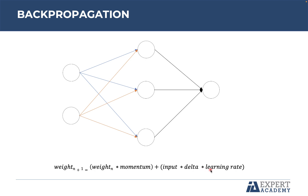Regarding the learning rate, it is defined by the user. When you create a neural network, you must specify it, and it defines the speed of the algorithm to reach the global minimum. In general, the value is 0.001, 0.0001, and so on — it is a very small value.